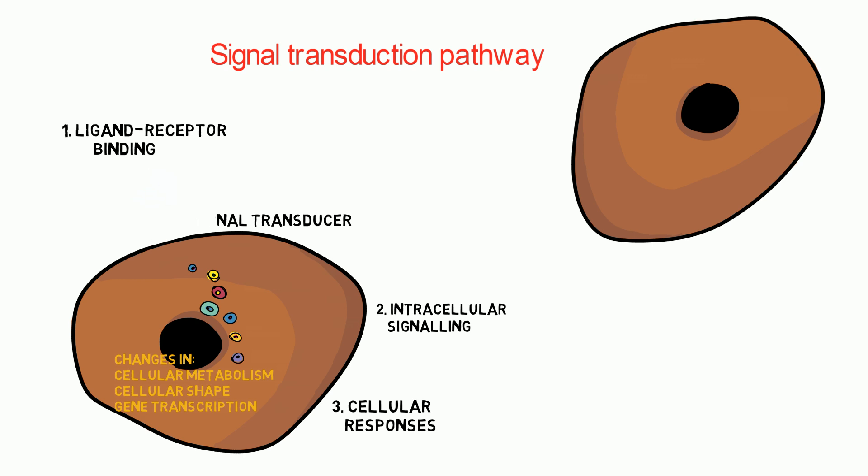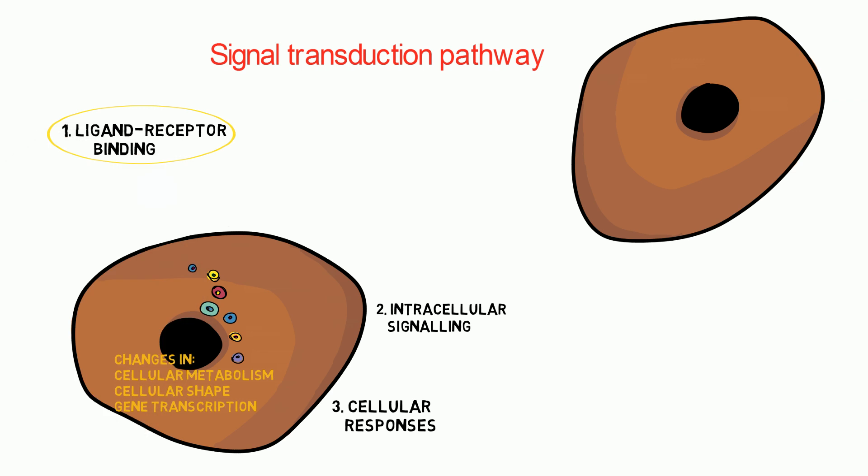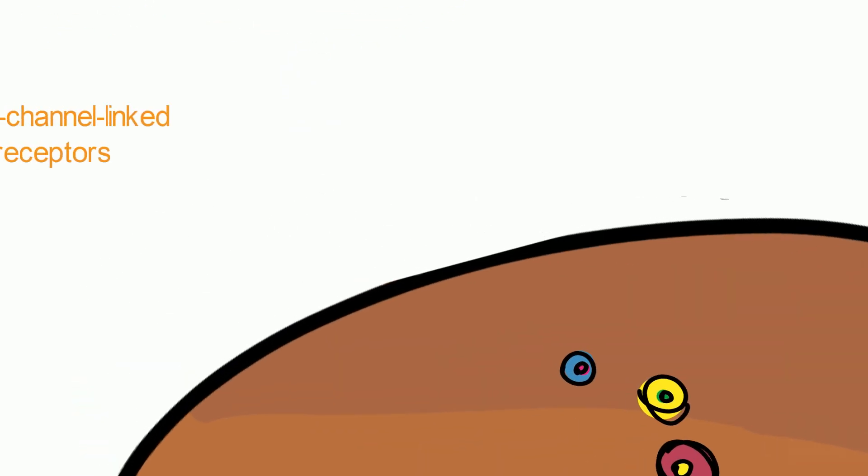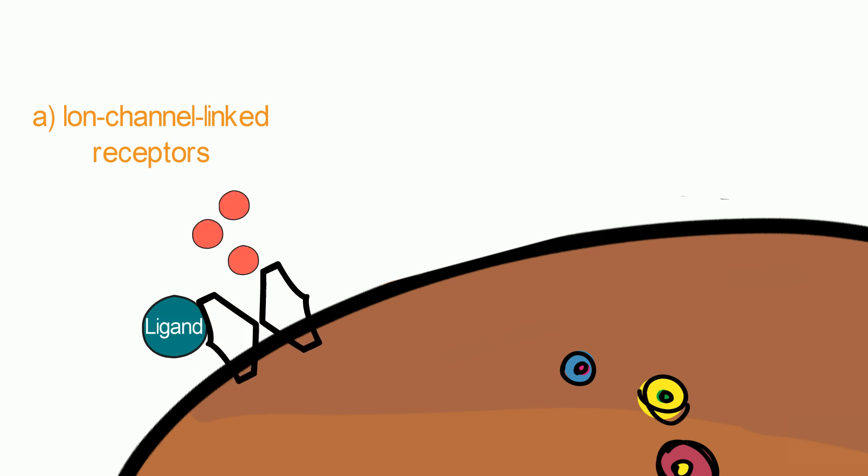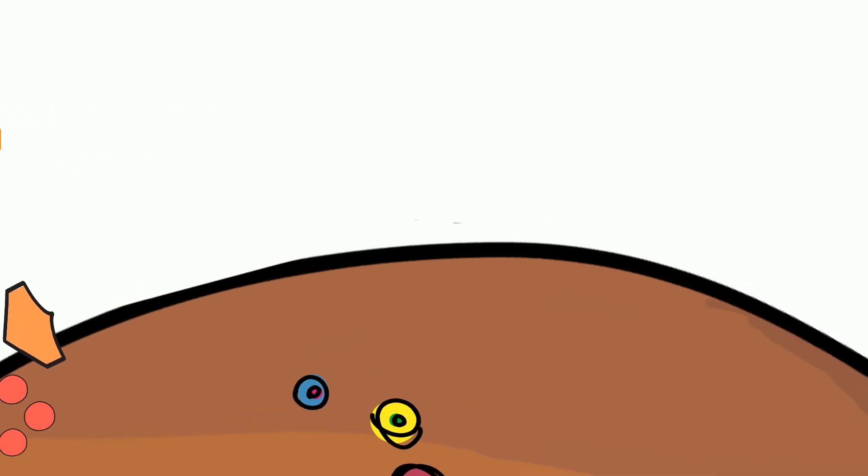Let's look at the first event of ligand receptor binding. There are three classes of cell surface receptors. Ion channel linked receptors are important for synaptic signaling. They are opened when a ligand binds to the receptor. This allows the entry of ions into the cell, thereby changing the electrical potential of the cell membrane.